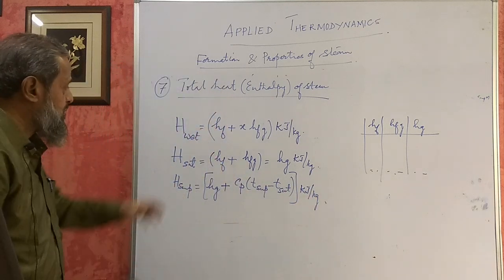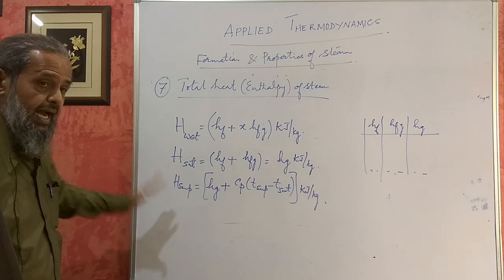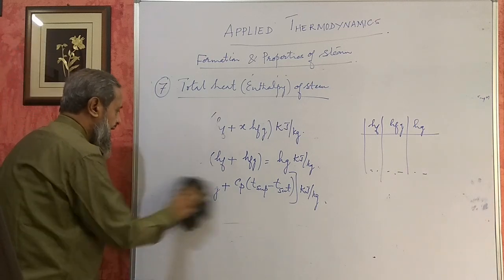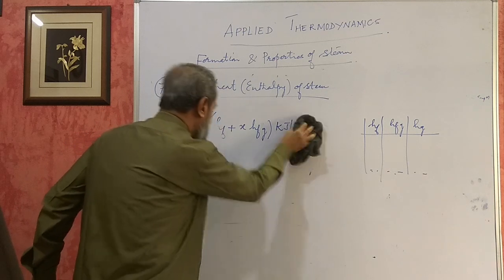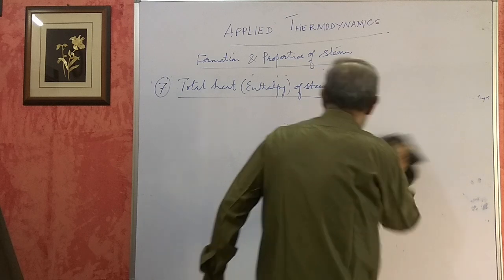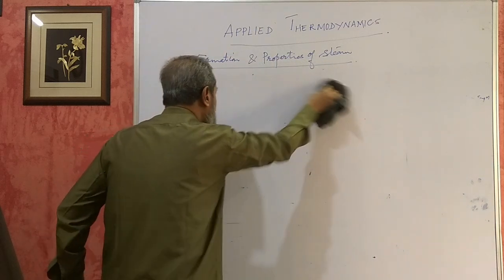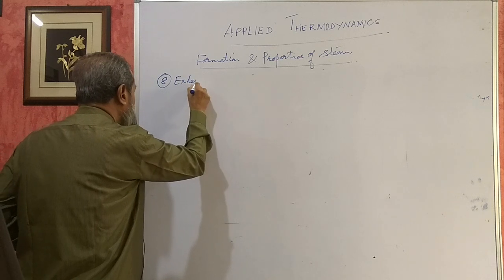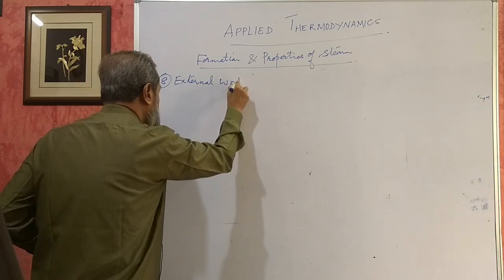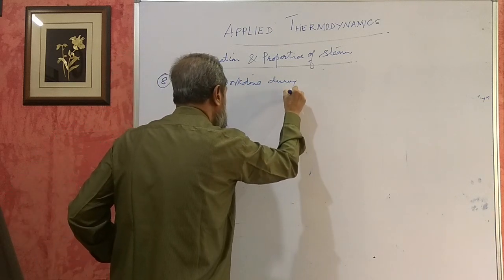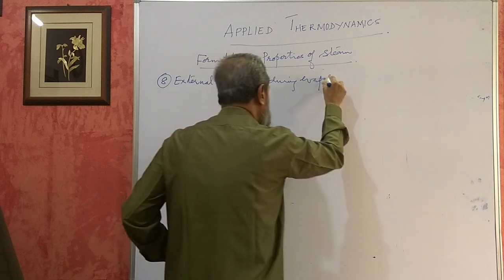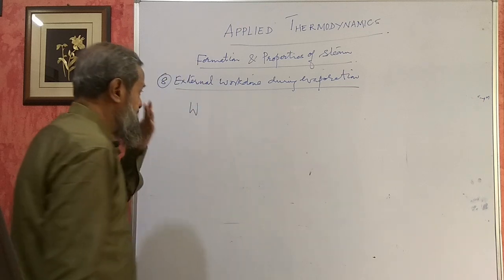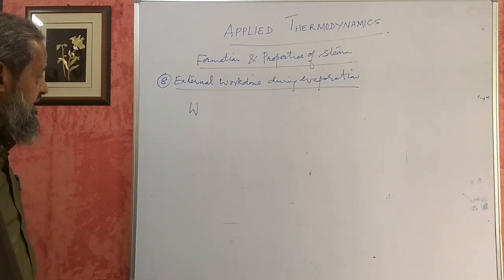These formulas give you the total heat or enthalpy of wet, dry, and superheated steam, and you have to know them to do numericals. After this comes the eighth property: external work of evaporation, or external work done during evaporation, denoted by W and given in kilojoules per kg.